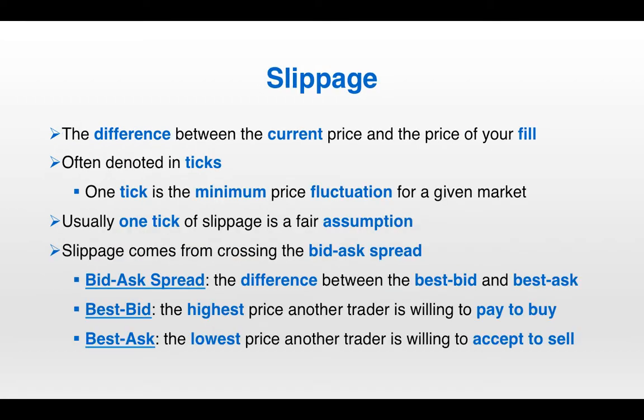What exactly is slippage? Slippage is the difference between the current price and the price we get filled at. It's often denoted in ticks, where one tick is the minimum price fluctuation for a given market. As we've discussed earlier, for a reasonably liquid market, one tick of slippage is usually a fair assumption.